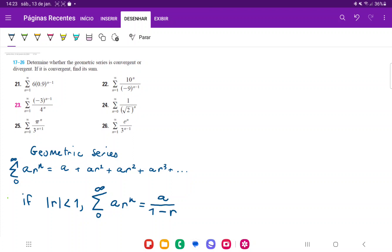A geometric series is convergent if the absolute value of r is less than 1.